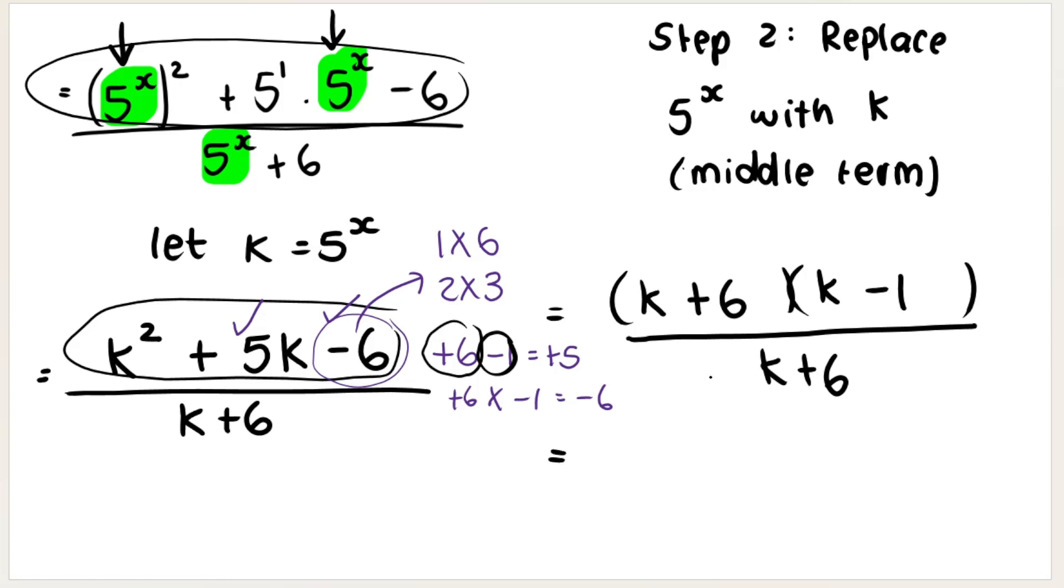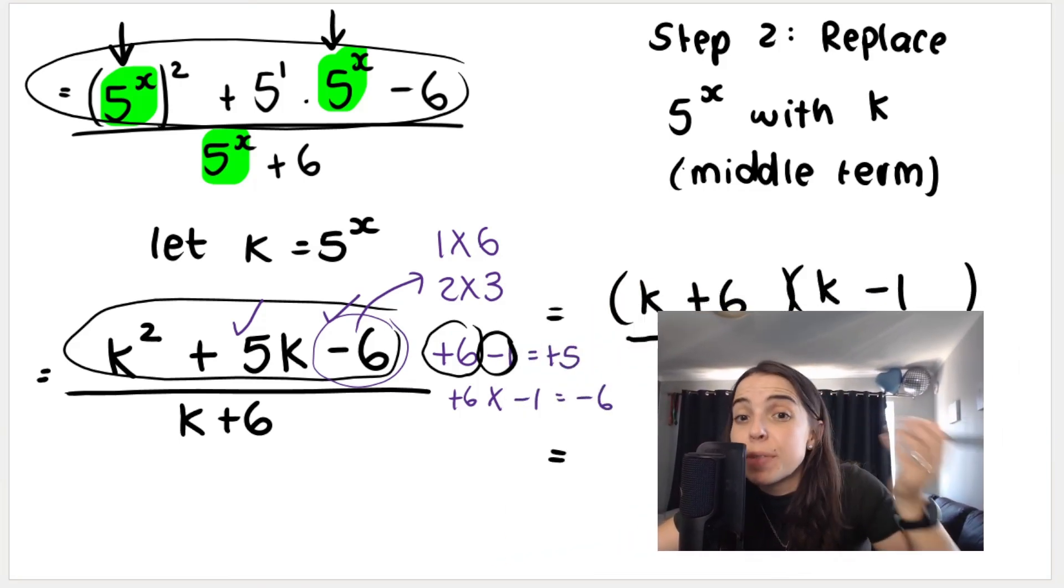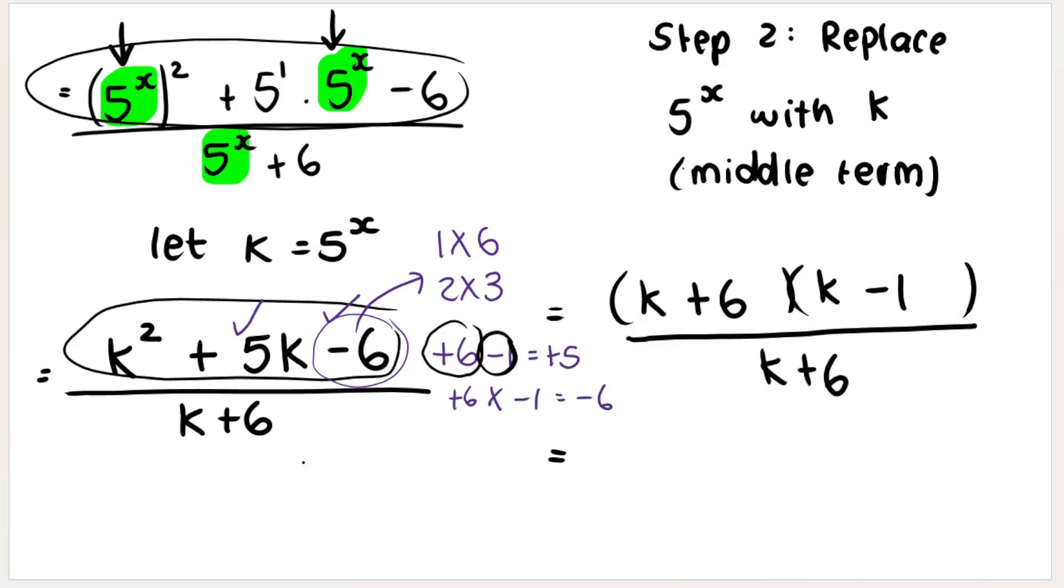And now I may simplify. So now that I have one term at the top, maybe yet one term. This is one term. It's two brackets, but that's one term. And I have K plus 6 at the bottom. This bracket may cancel with that bracket, leaving me with K minus 1.